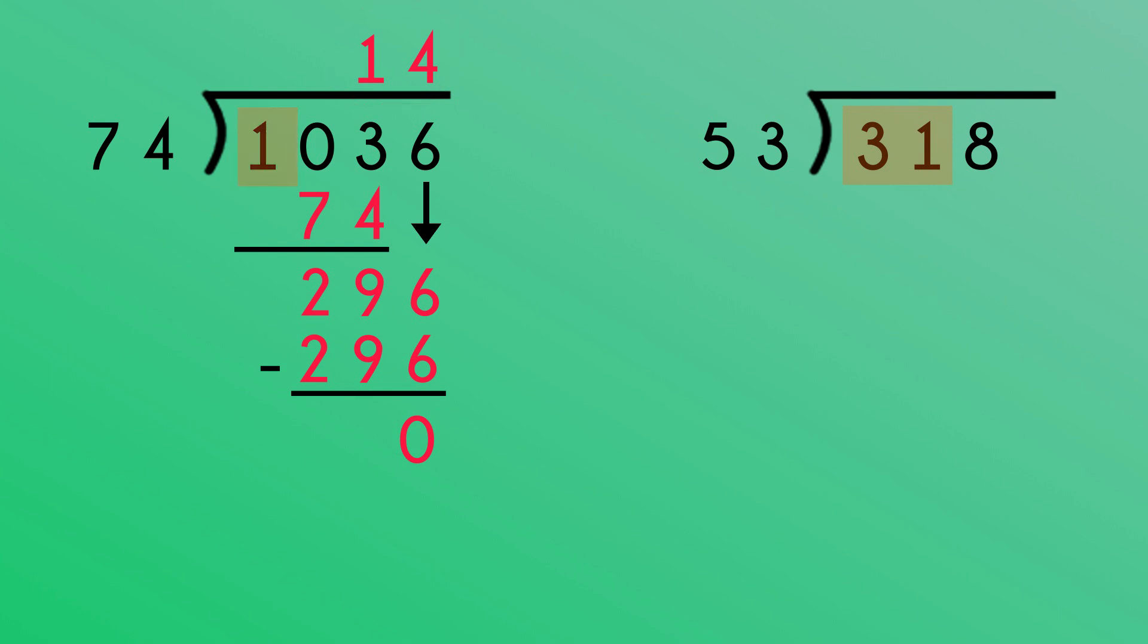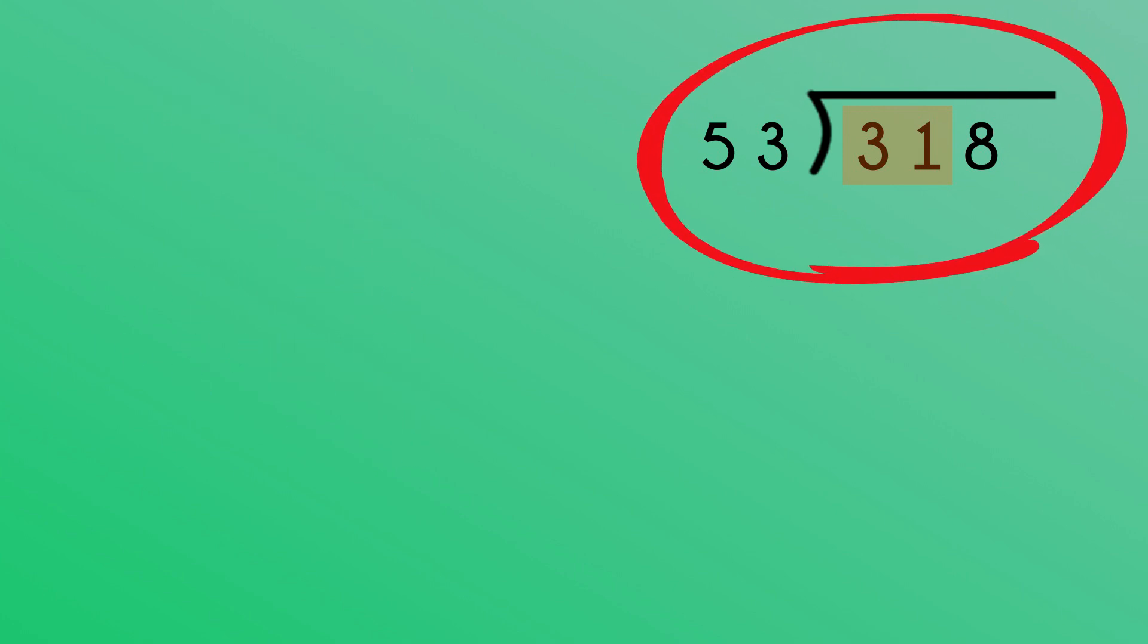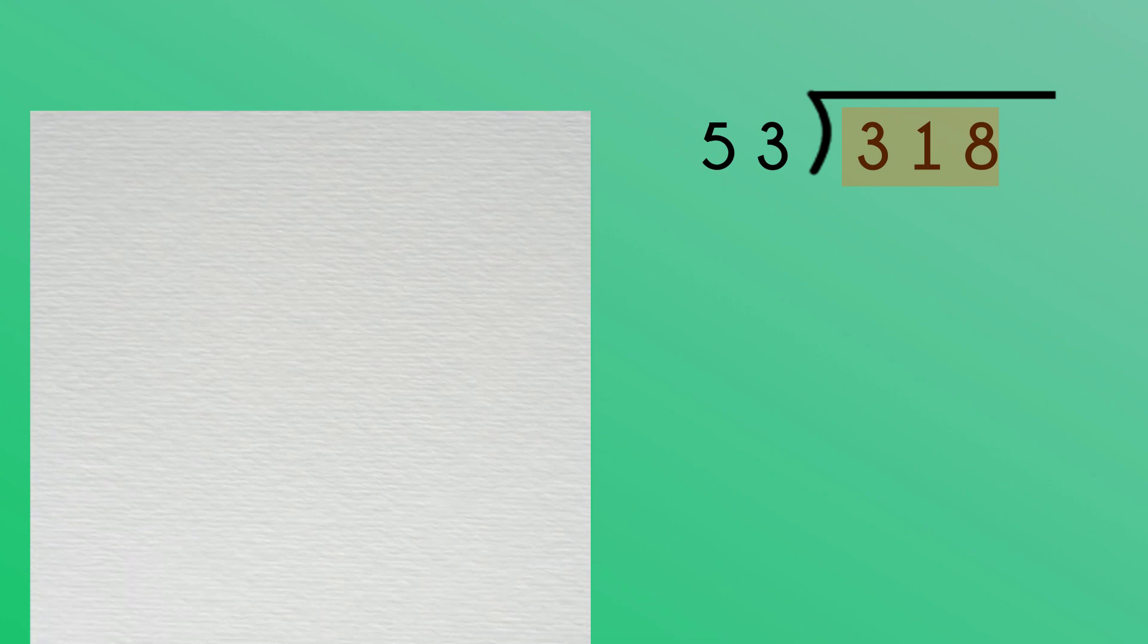You might have noticed the more digits we group together, the more difficult the calculations become. In this problem, look at what happens if we group the first three digits. It would be how many 53s in 318. This first step is the whole problem, so we're best off using our scrap paper, rounding and estimating.